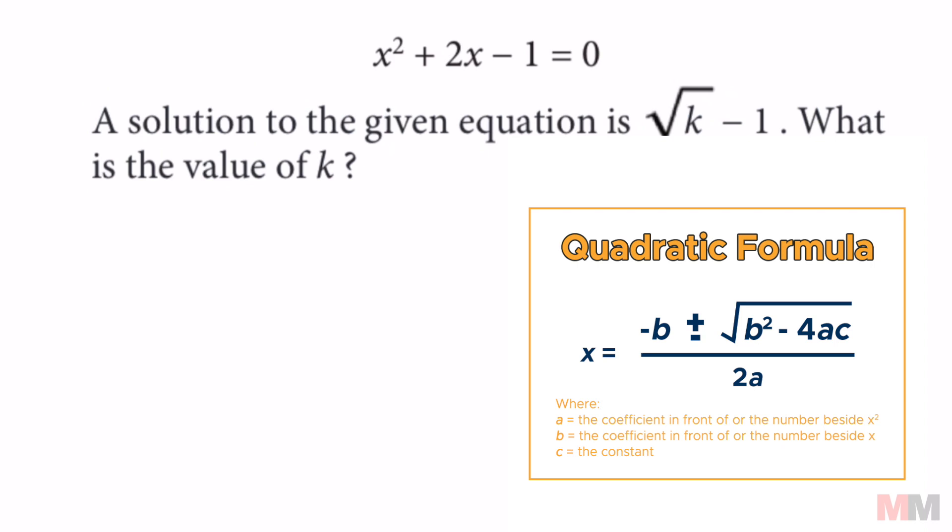My a, b, and c are going to be the numbers in the front. My a is the coefficient next to x squared, b is going to be the coefficient next to x, and c is my constant. Let's go ahead and pop those in.